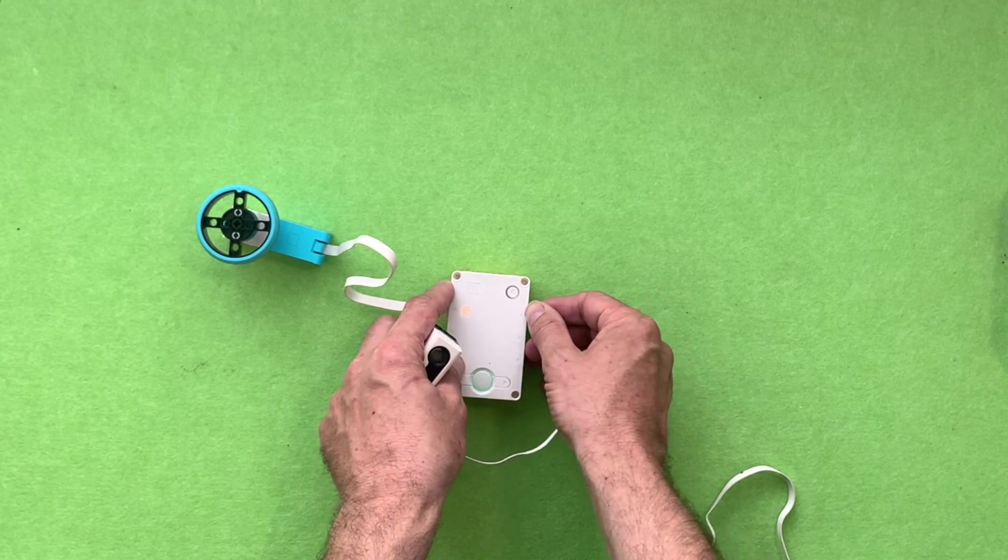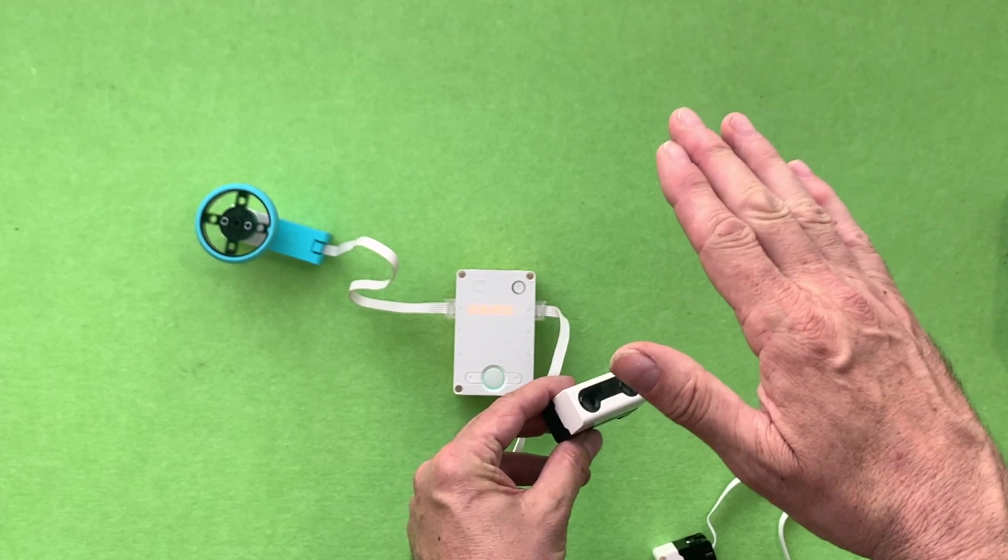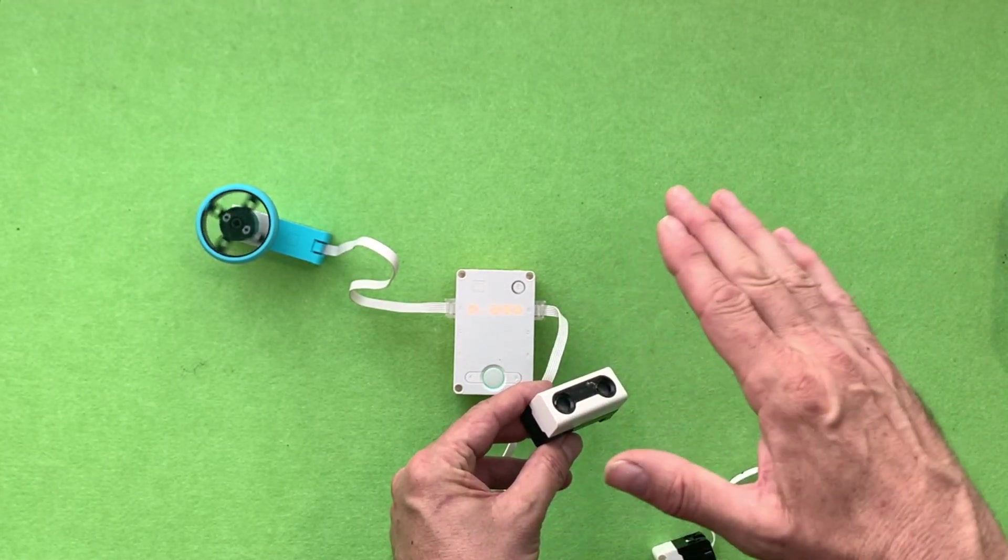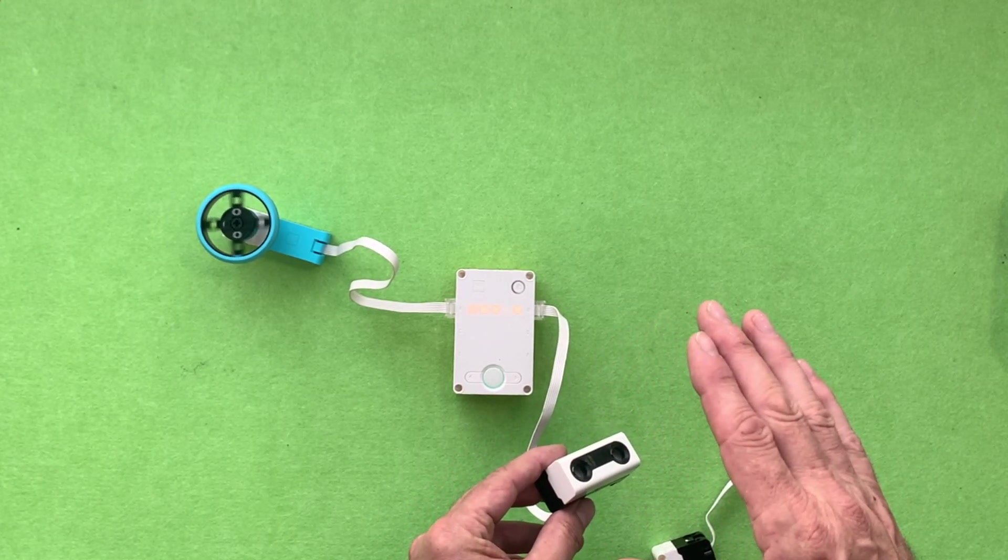Let's try it with the distance sensor now. The distance sensor, or ultrasonic sensor, will behave in a way that when your hand is closer, it will go faster. The further away your hand is, the slower it goes.